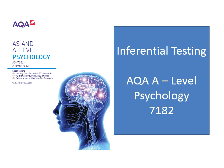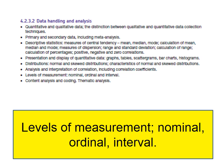Hi everybody. This is a revision video for the inferential statistics part of the AQA Psychology Year 2 specification. I'm going to cover some of the bullet points on the specification, and some prior knowledge is assumed here — in particular reference to the seventh bullet point of the data handling and analysis section, which is the levels of measurement. If this is something you're not familiar with, I suggest you do a quick bit of cramming before watching this video.